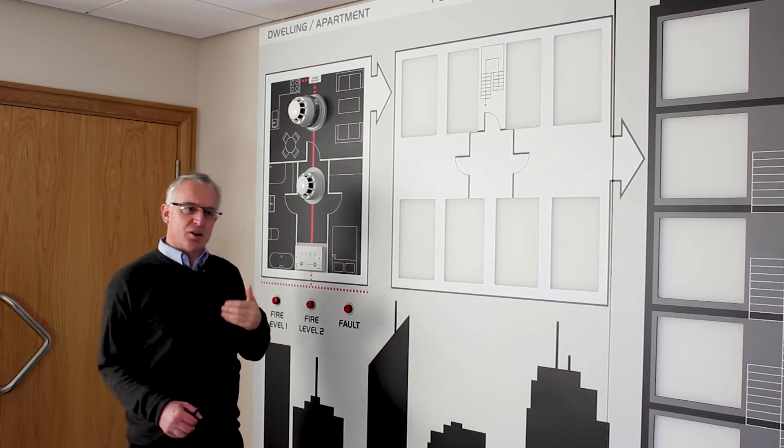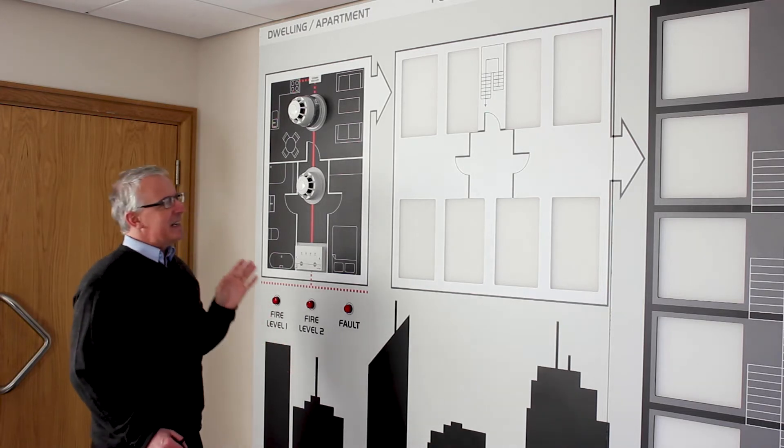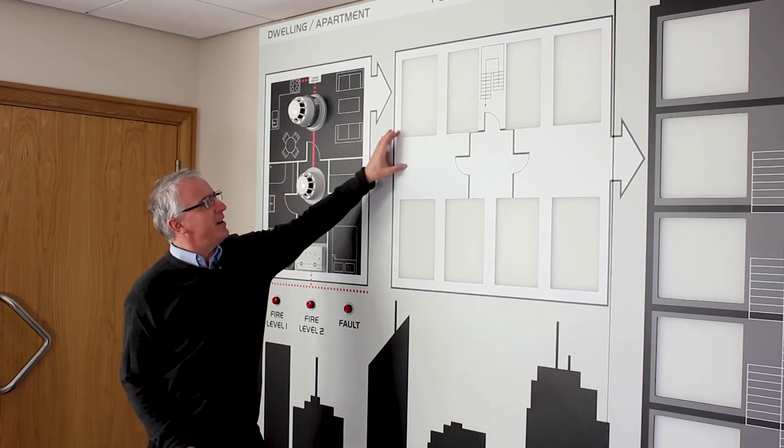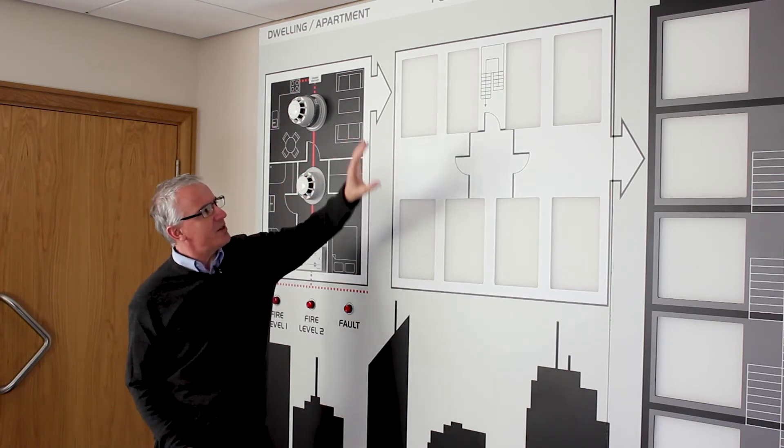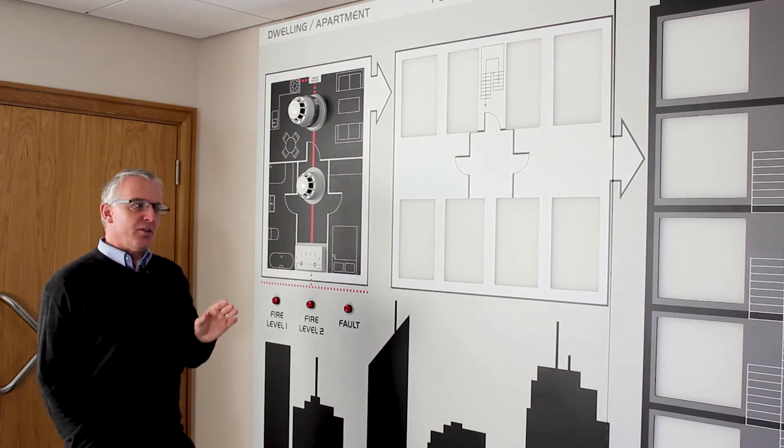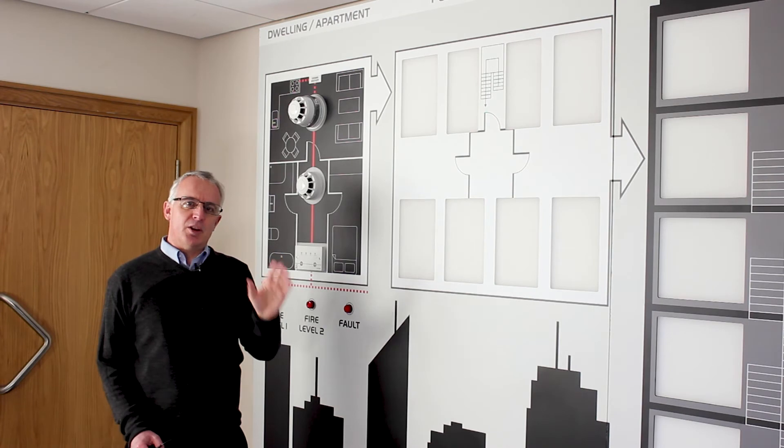We can regard that as a confirmed alarm signal, and in such situations would it not make sense if the fire was in this particular dwelling to warn other dwellings on that floor that there's a fire? Well, using the cause and effects on the landlord panel, we can do just that.